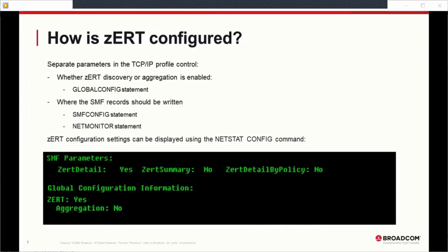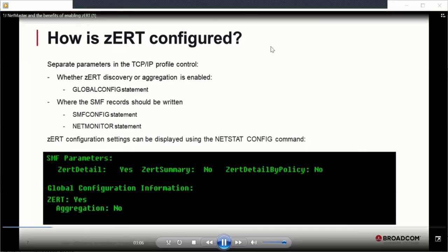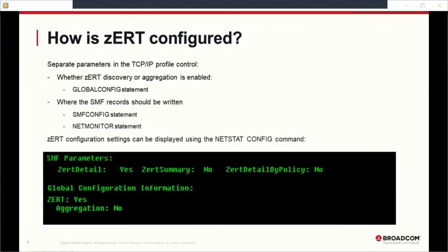How is ZERT configured? There are separate parameters in the TCP/IP profile that control whether discovery or aggregation records are enabled, done with the global config statement, and also where SMF records should be written, accomplished with the SMF config statement or the net monitor statement. It's important to remember to not only enable ZERT discovery or aggregation, but also to enable recording to SMF or real-time NMI destinations, since each have their own separate controls. Once configured, settings can be displayed using the netstat config command.